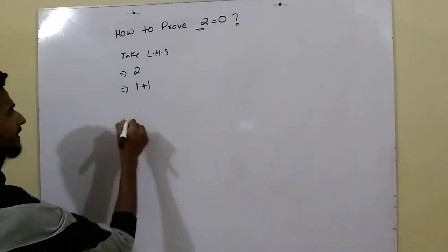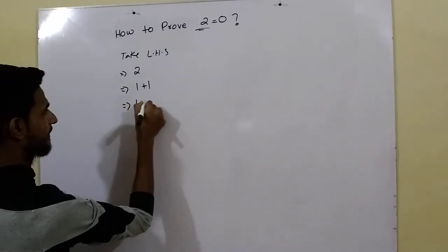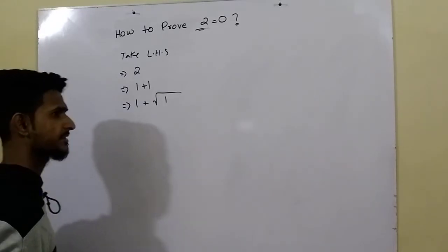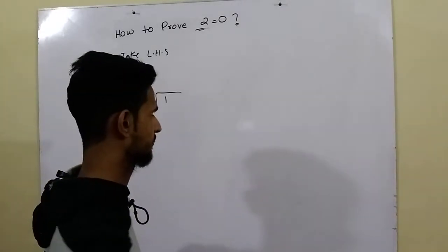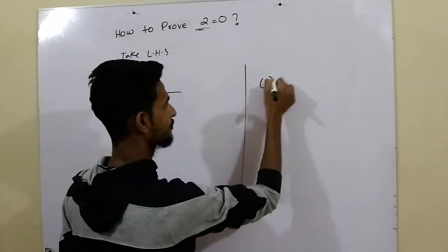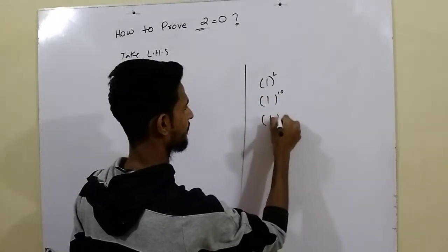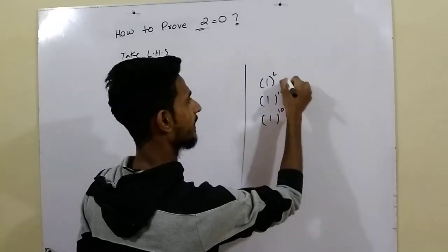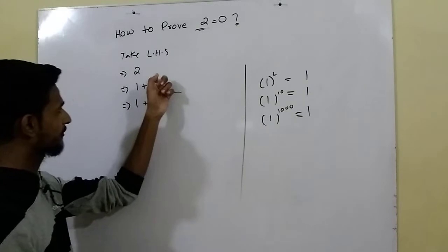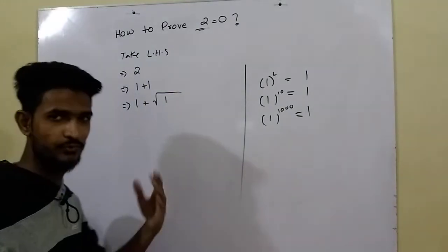And further, can I write the second 1 into under root 1? Yes, definitely we can do this because we all know that 1 with the power of 2, 1 with the power of 10, 1 with the power of 1000, it will definitely become 1 again. So we can write this 1 into under root 1.